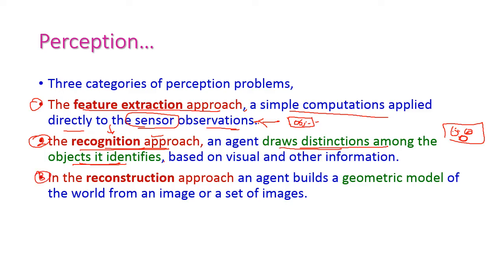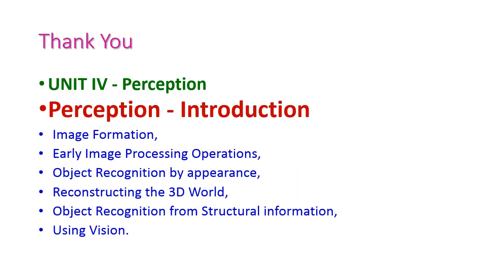The third one is the reconstruction approach. The agent builds a geometric model of the world from the image or set of images. That is called reconstruction. So far we have seen the introduction of perception, the second part of fourth unit. In the next class we will see image formation, and then complete all the other topics from the fourth unit. For more information, please go through your textbook. Thank you.